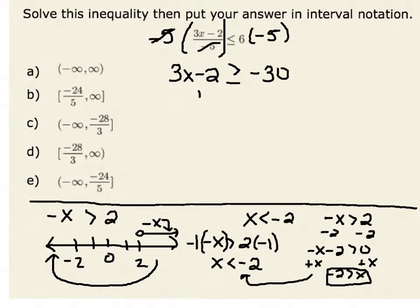Now I can add 2 to both sides, and I would have 3x is greater than or equal to negative 30 plus 2, which is negative 28. Finally, I'm going to divide both sides of my equation by 3, resulting in the statement that x has to be any number greater than or equal to negative 28 thirds.